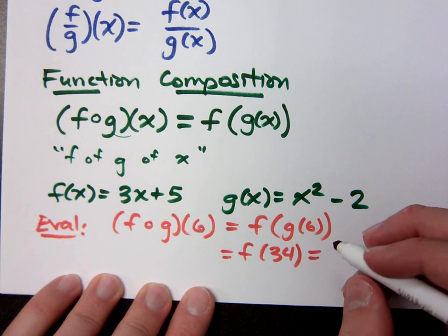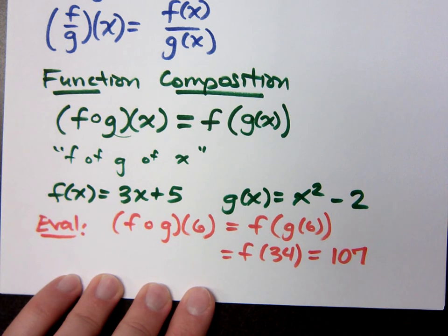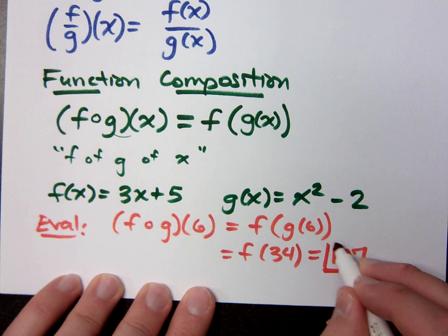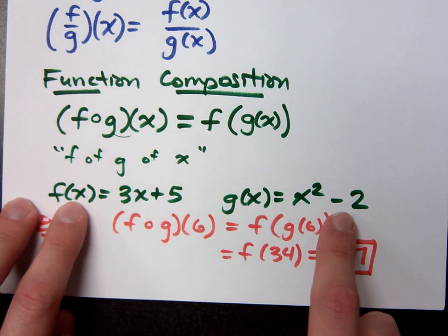107. Yeah, 107. Can I trust you on that? 3 times 34. Oh, you're using this with the equation above it. Okay. I gave you f and g. I'm using these guys right here. Yeah, I got you.